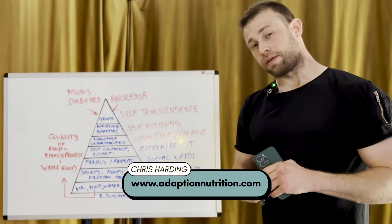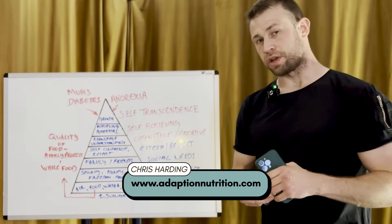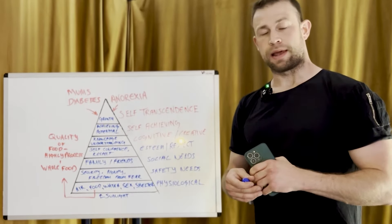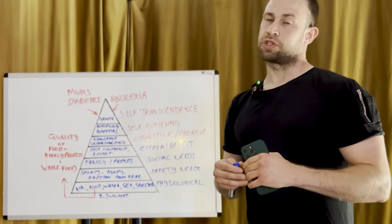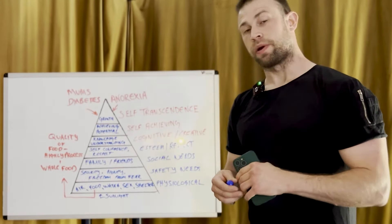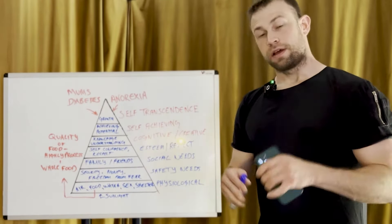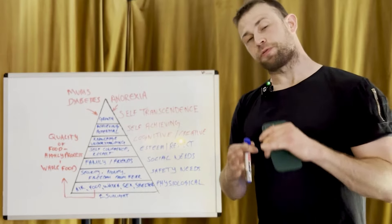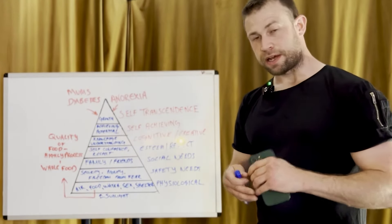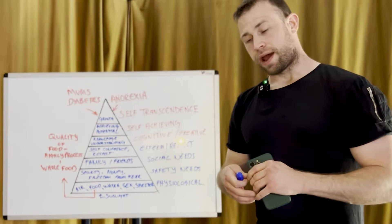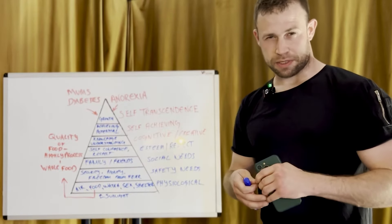In 1943, there was a paper published called 'The Theory of Human Motivation,' published in the Psychological Review. The author was a guy called Abraham Maslow, and he predicted that humans had a hierarchy of needs. This theory has become very popular and is most commonly used in business industries and circumstances.